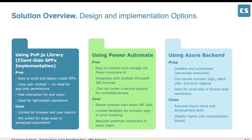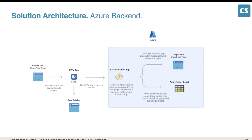My preferred approach for production is an Azure backend — using an Azure Function. It is scalable, so you can copy to one target site or multiple sites. You can define groups for departments or locations mapped to certain sets of sites. I would also add logging to track everything that happens — successes and errors. So in a production environment, the SPFx app triggers the Azure Function, which can copy to one or multiple sites based on defined group configurations. That is the architecture I would use in a real enterprise environment.